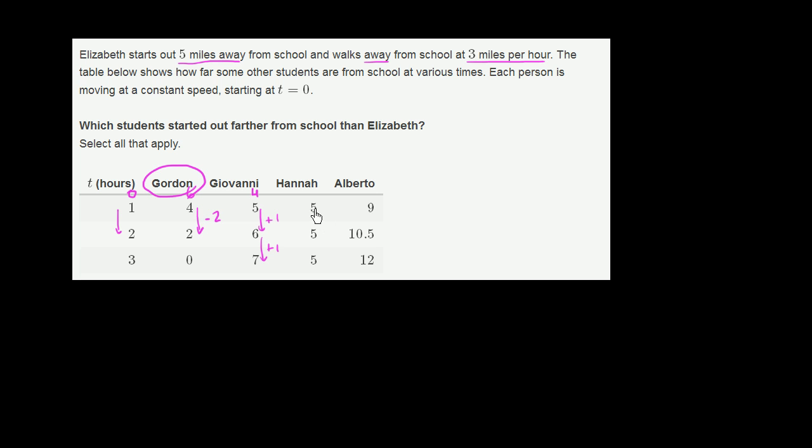Now let's look at Hannah. Hannah, at every time, is just exactly 5 miles away from school. So she's napping or something. She is not actually moving. So Hannah started out napping at exactly the same distance as Elizabeth. But she did not start out farther from school than Elizabeth. So Hannah does not meet the criteria.